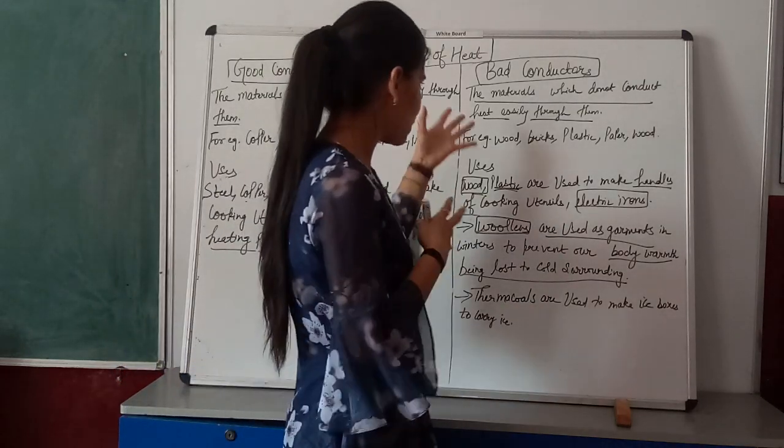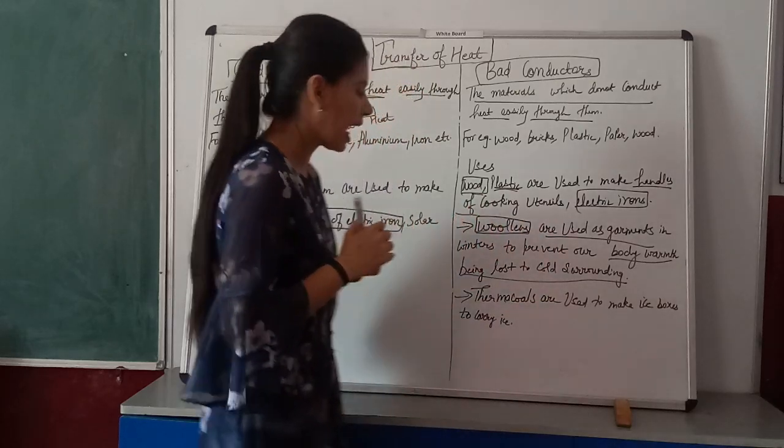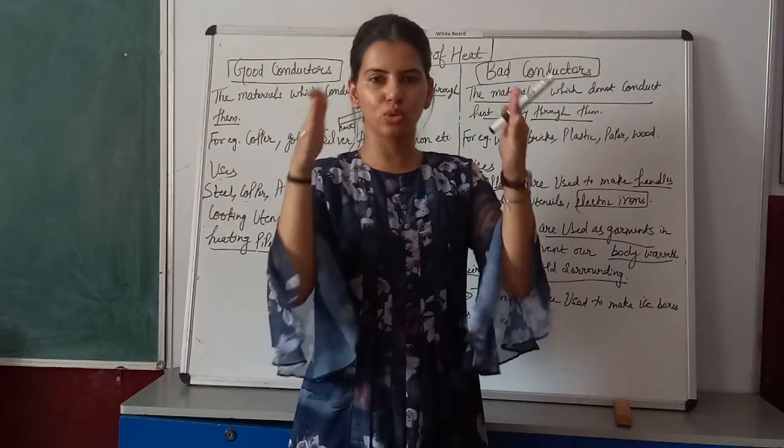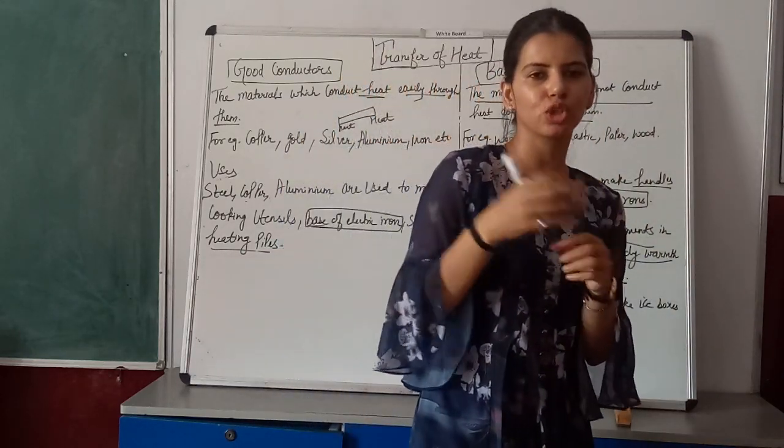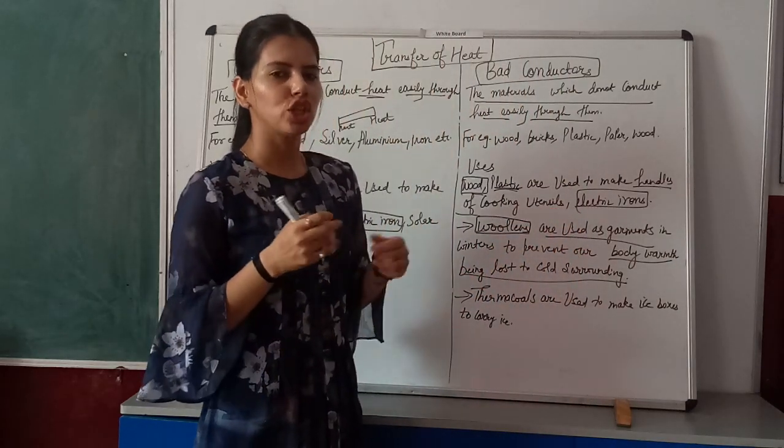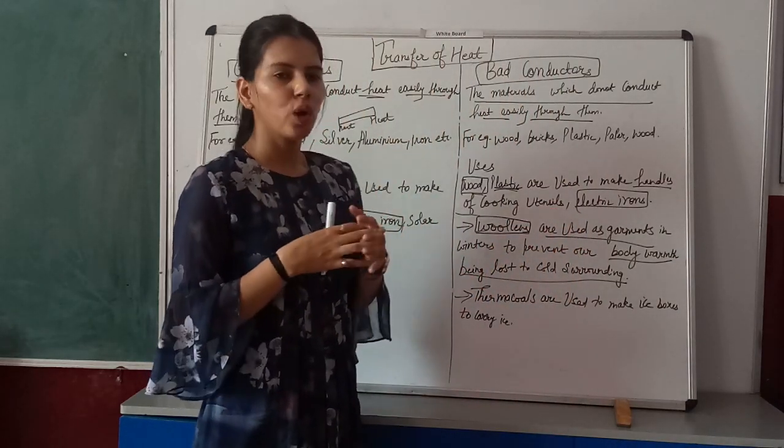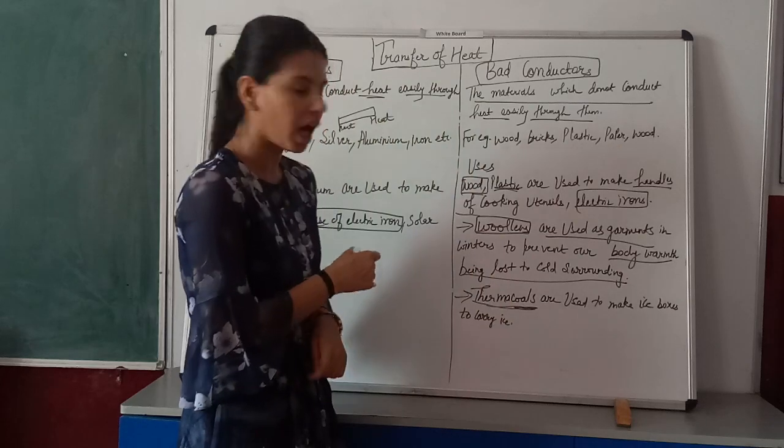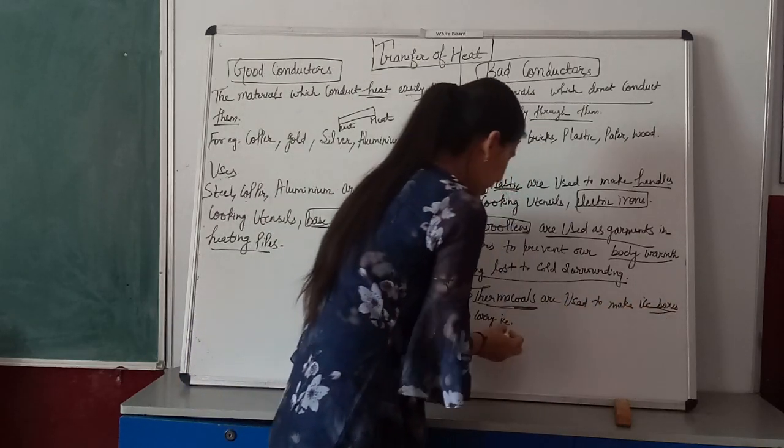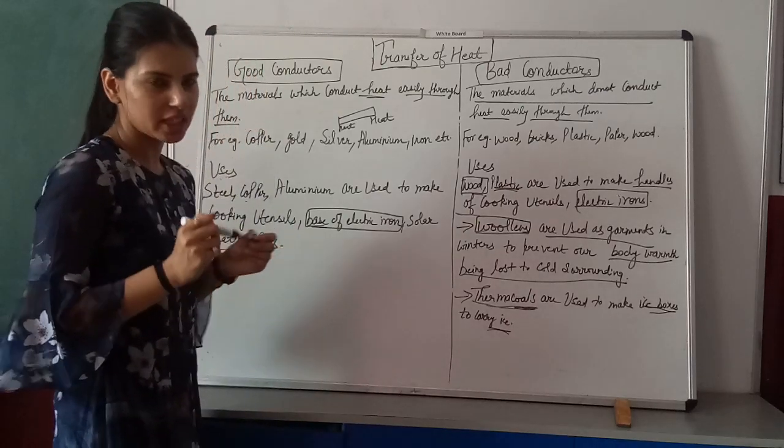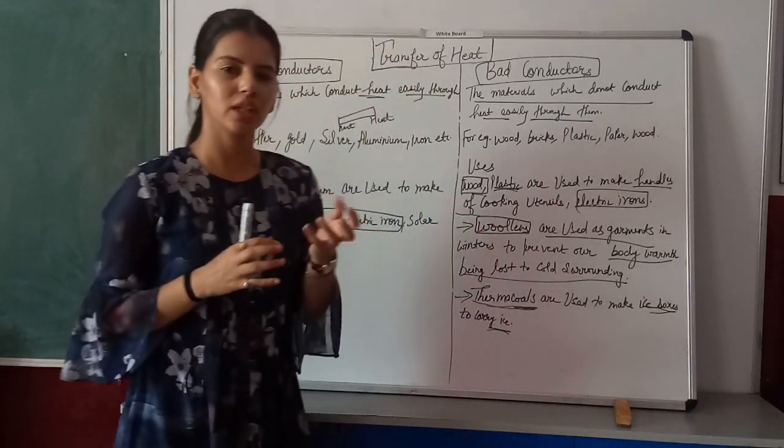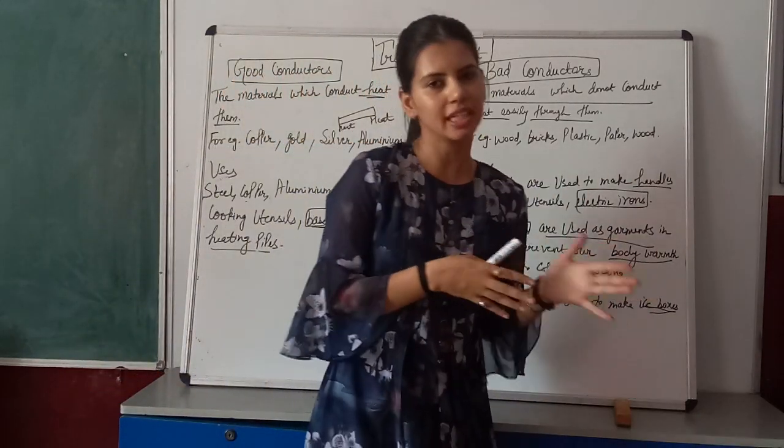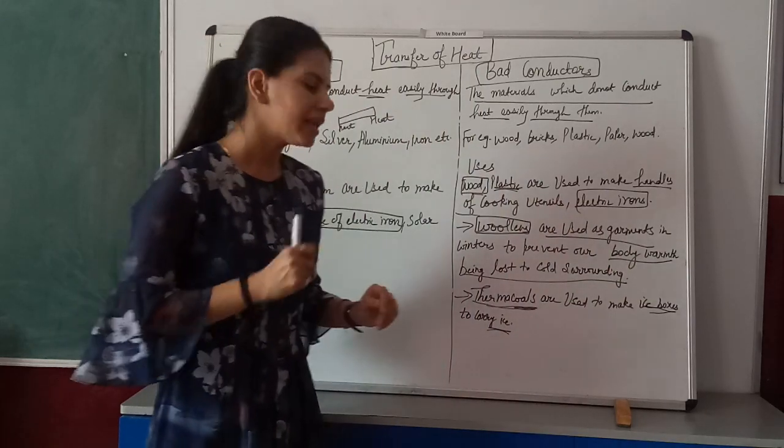One more use of bad conductors is thermal containers, used for carrying ice. If you go traveling, you can carry cold drinks and ice in thermal containers. Since the container is a bad conductor, it doesn't allow outside heat to enter, so the ice won't melt. This is all about conduction. Now we will move to the next mode of heat transfer.